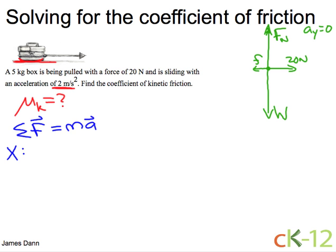In the x direction, we can add up all the forces in the x direction. And that equals the mass times the acceleration in the x direction. Well, looking at our free body diagram, we only have two forces in the x direction. We have the 20 N minus the force of friction. And then that equals the mass of the box times its horizontal acceleration.